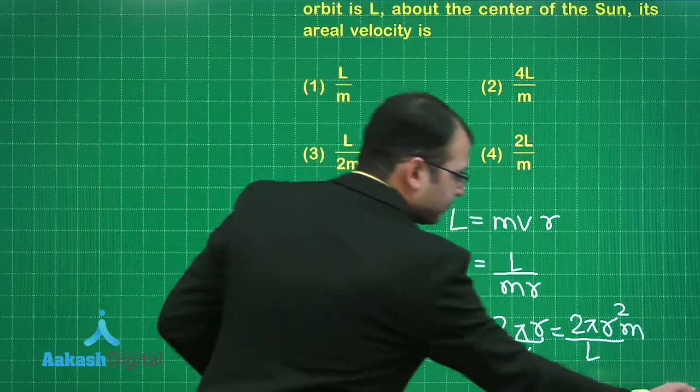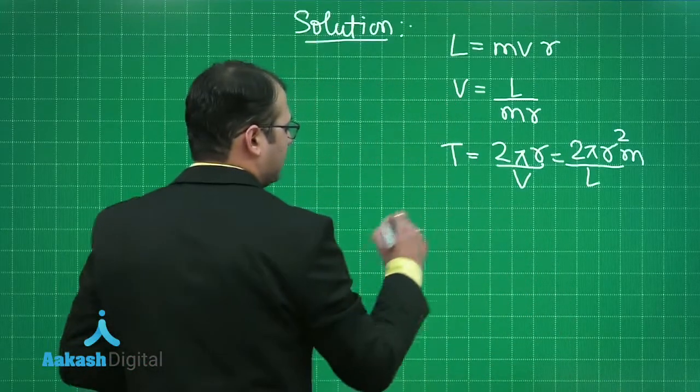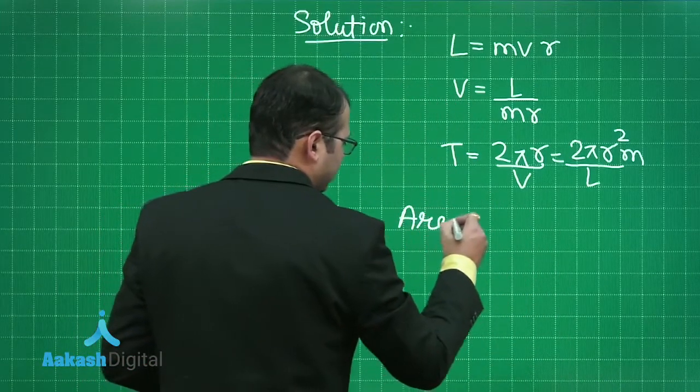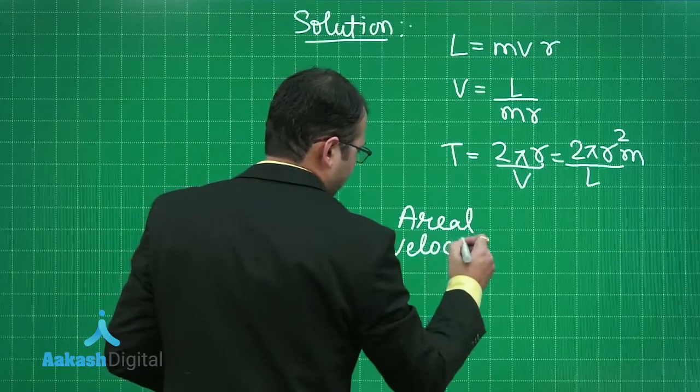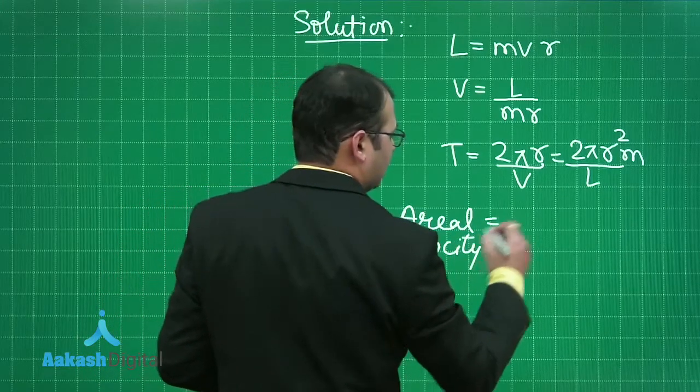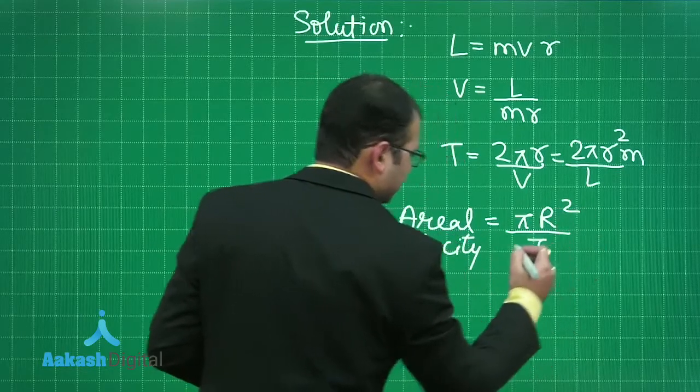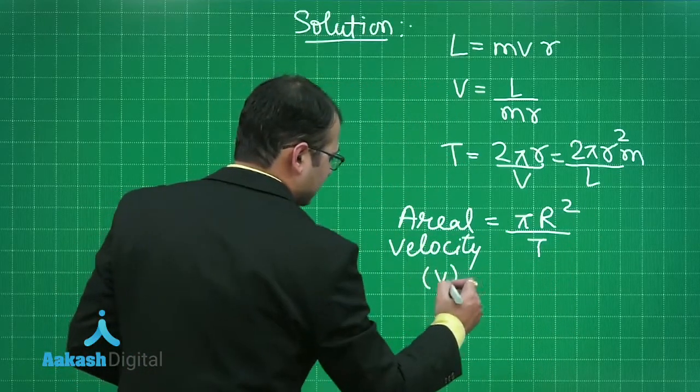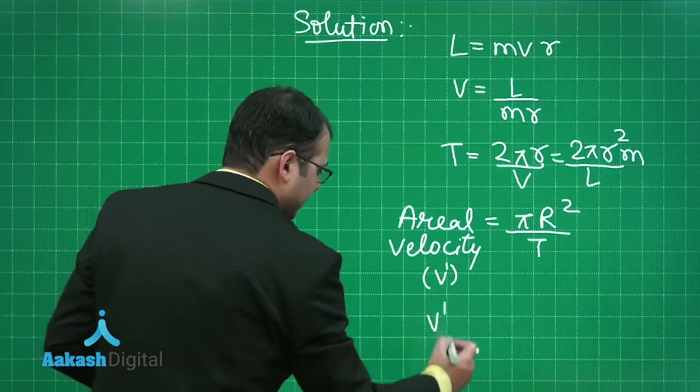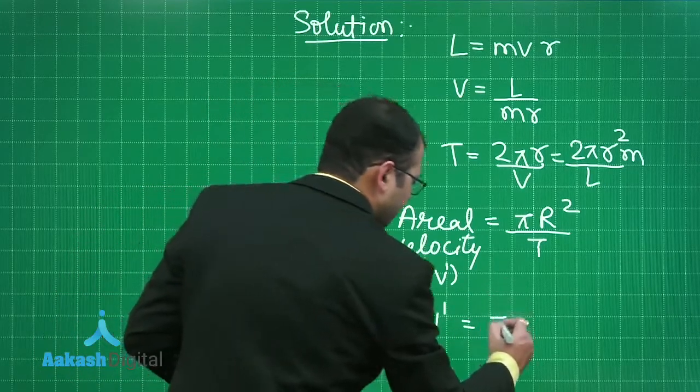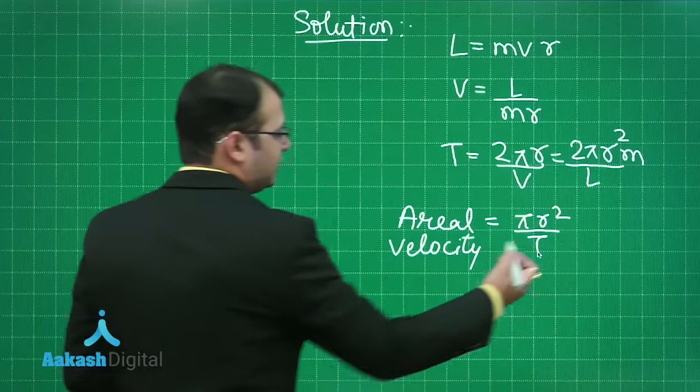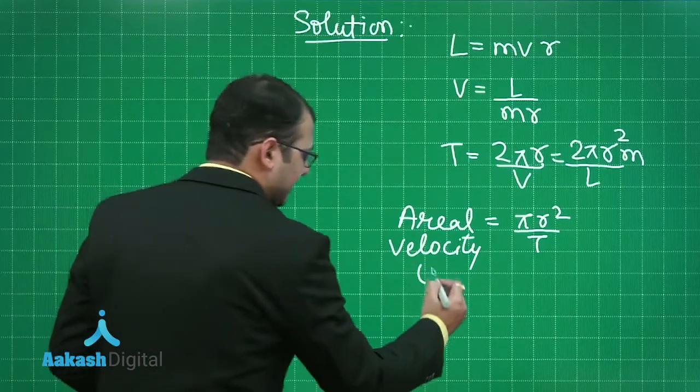This is the time period. From here the areal velocity would be equal to the area covered divided by the time taken. Let's consider this as V dash. This V dash would be equal to pi R square by time taken, that is area covered by time.